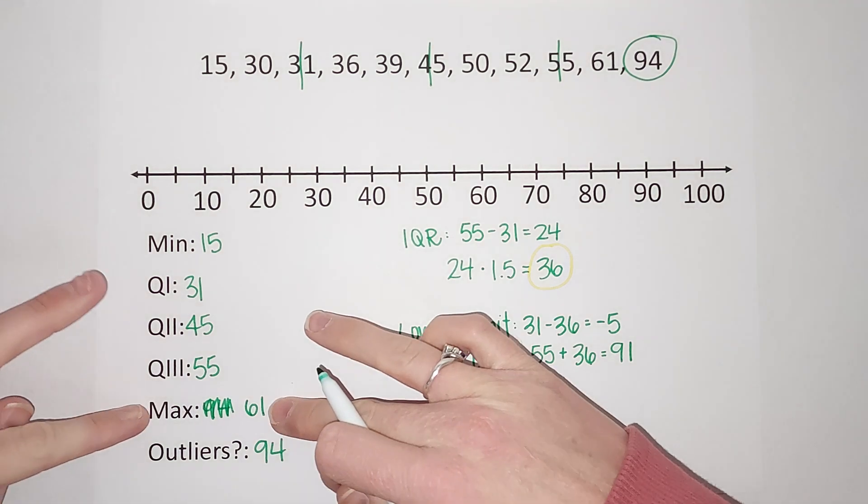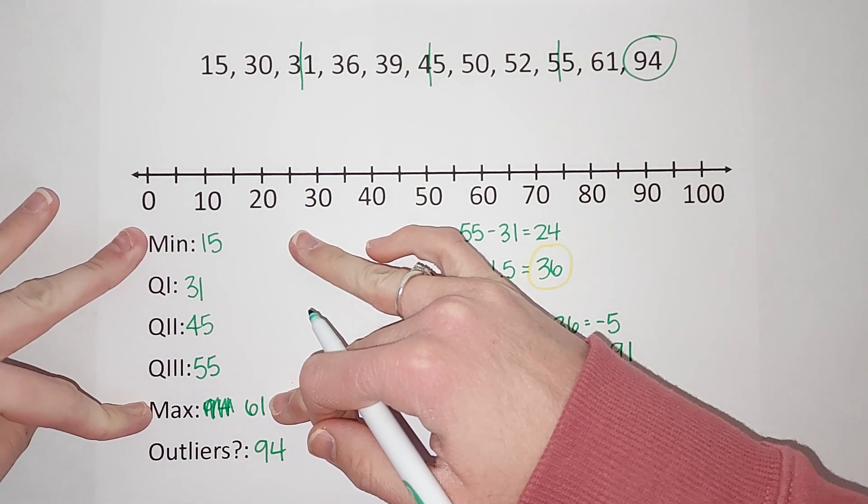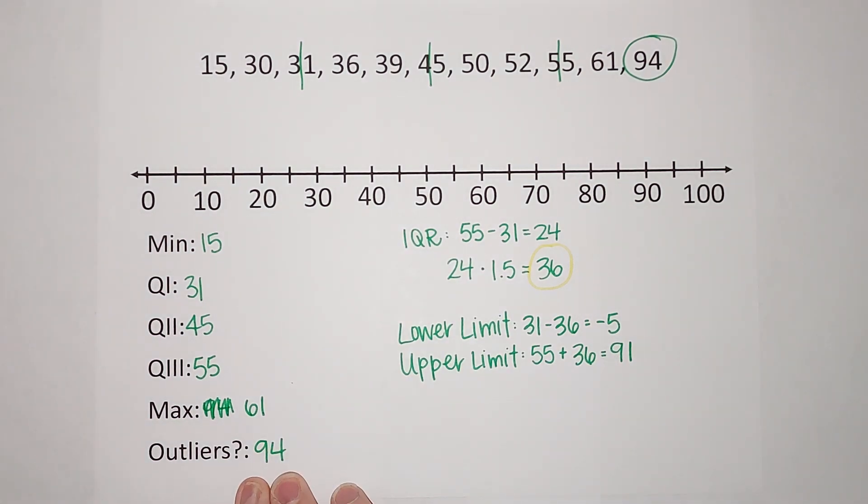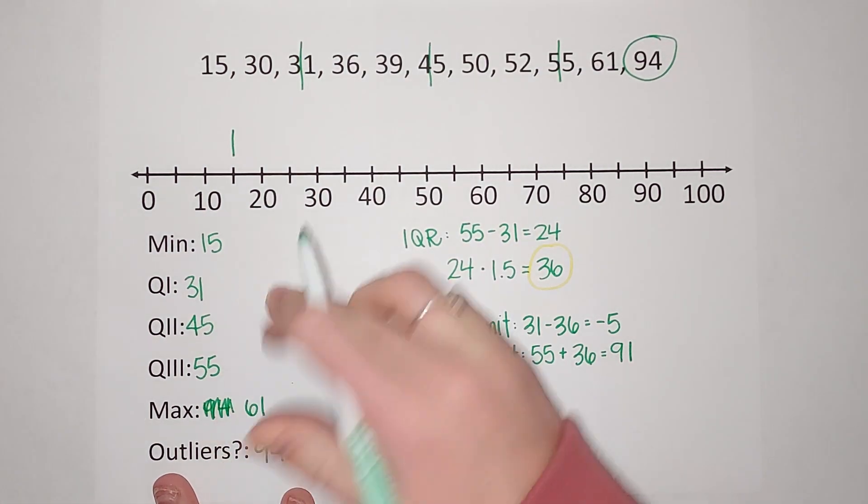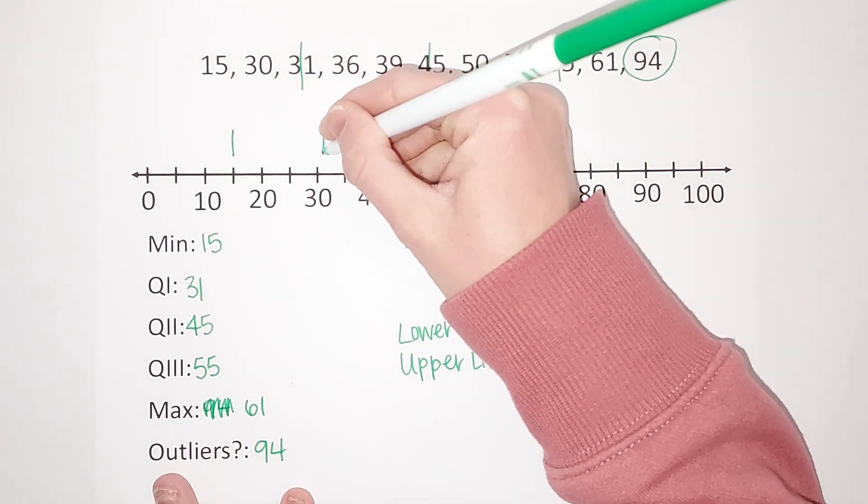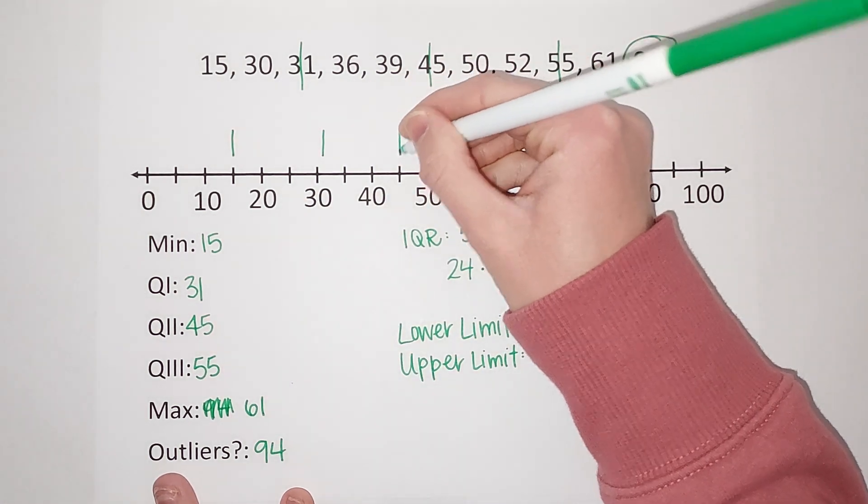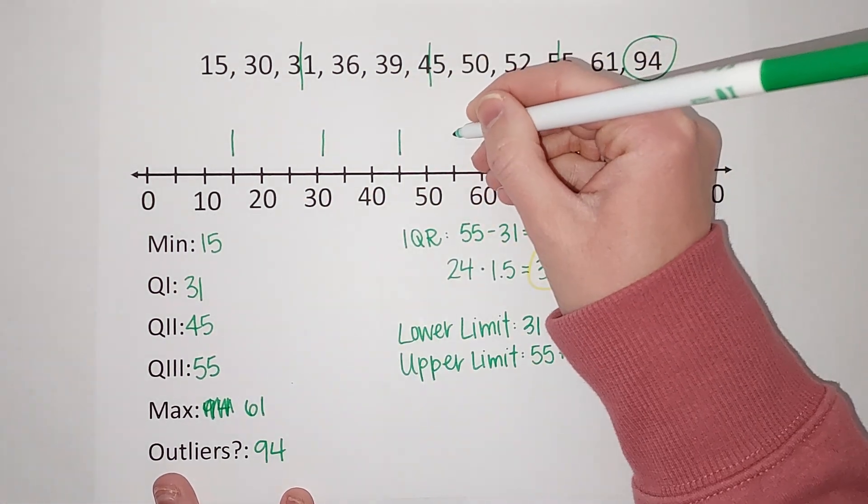Now we are going to plot this, doing my five numbers just like a box and whisker, and then we just label the outlier with a little asterisk. My minimum is 15, quartile 1 is 31, 45, 55—these are nice and even—my new max is 61.